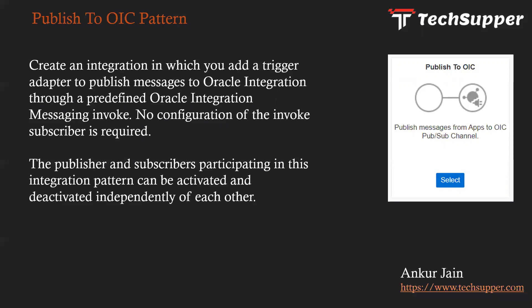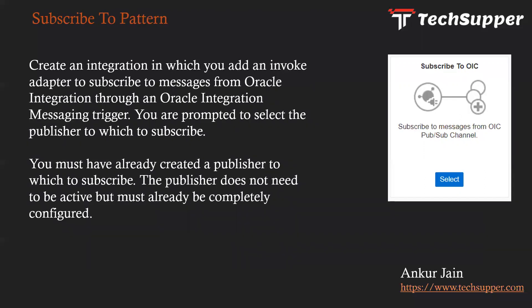Once the message is published into the OIC queue, we use the Subscribe to OIC pattern to subscribe to those messages. For example, if you have two downstream applications where you want to synchronize employees, you create two subscribers — one per downstream application. As soon as a message enters the OIC queue, the subscribe pattern picks up those messages and sends the employee data to the target application. You create an integration where you add an invoke adapter to subscribe to messages from Oracle Integration through an Oracle Integration messaging trigger.